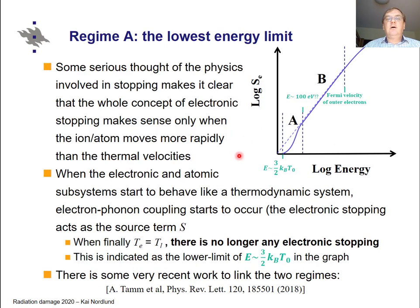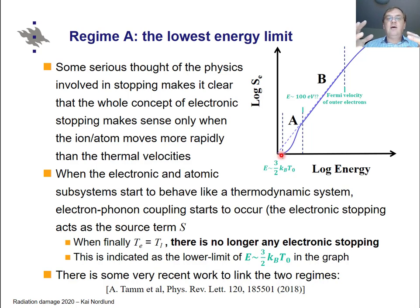Thinking about how this relates to our problem: electronic stopping makes sense when the ion moves much more rapidly than thermal velocities. But as the ion slows down towards thermal velocities, it starts colliding with surrounding atoms and gives temperature to the solid — we can describe this as a lattice temperature, just like in a collision cascade. When there is a lattice temperature, we can apply the concept of electron-phonon coupling. So the electronic stopping somehow transitions into an electron-phonon coupling regime, and finally, when the electron and lattice temperatures are identical, there is no longer any electronic stopping and we return to equilibrium thermodynamics.